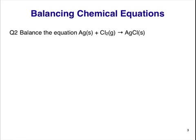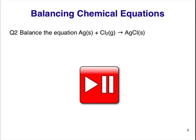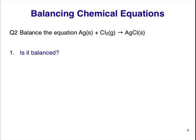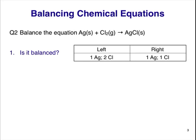Question 2. Balance the equation Ag plus Cl2 making AgCl. Pause the video here and work out your answer. The first step is to count the number of each type of atom on both the left and right side of the equation. On the left, we have one Ag and two Cl atoms. On the right, we have one Ag and one Cl atom.